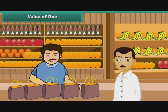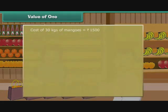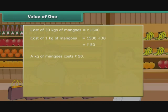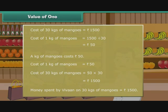Value of 1. Vivan buys 30 kgs of mangoes and spends 1,500 rupees. How much does 1 kg of mangoes cost? Cost of 30 kgs of mangoes is 1,500 rupees. Cost of 1 kg of mangoes is 1,500 divided by 30, that is 50 rupees. A kilogram of mangoes costs 50 rupees. Let us verify our division: cost of 1 kg is 50 rupees, so cost of 30 kgs is 50 into 30, which equals 1,500 rupees. So we verify that our division operation is correct.